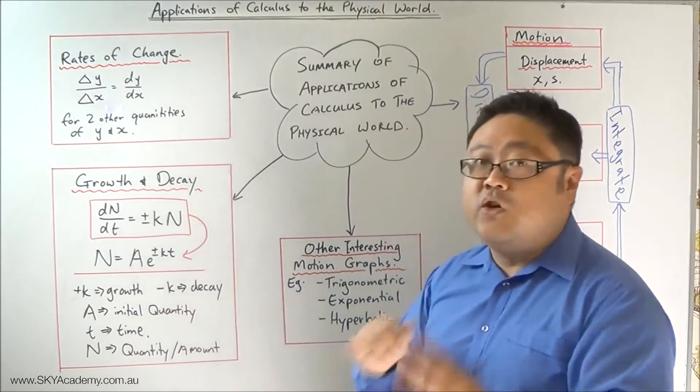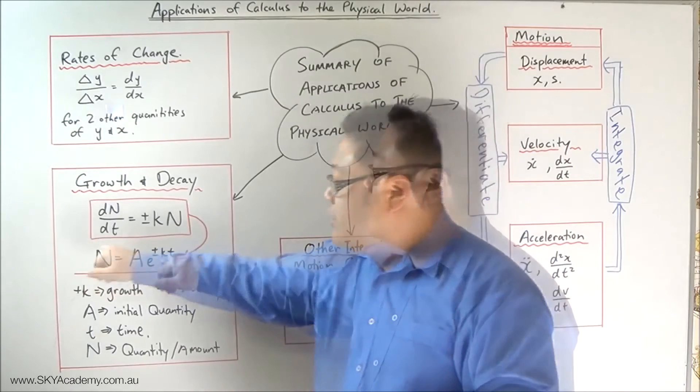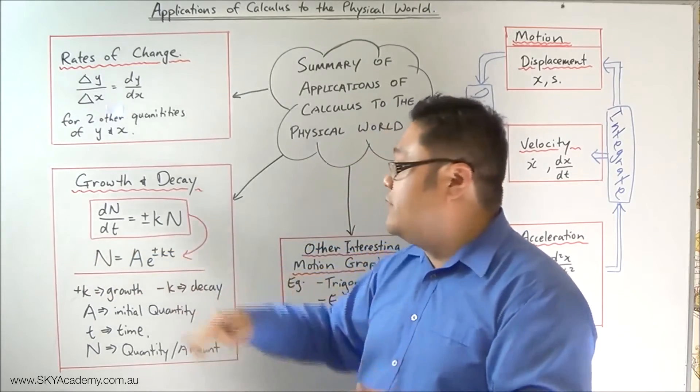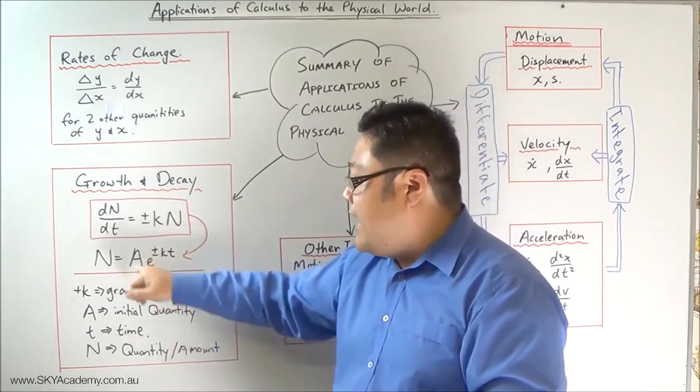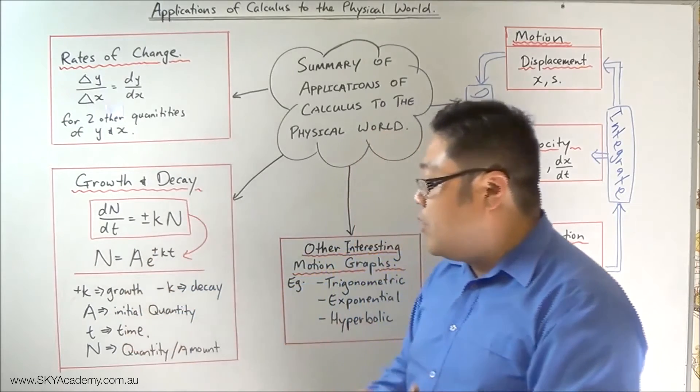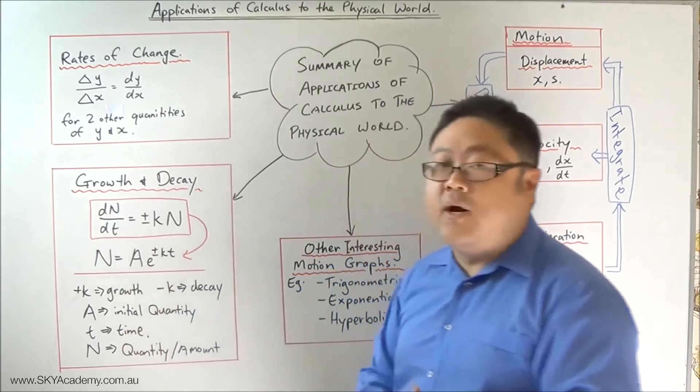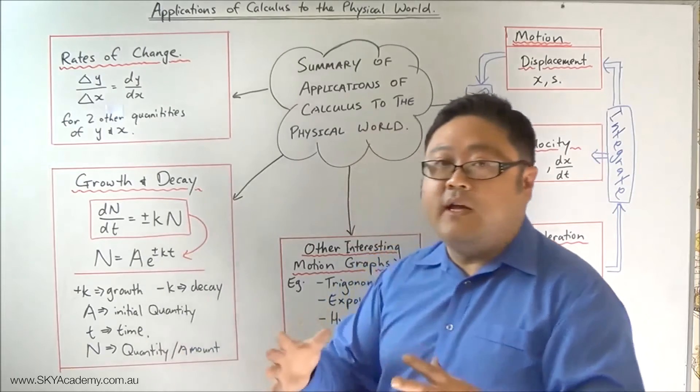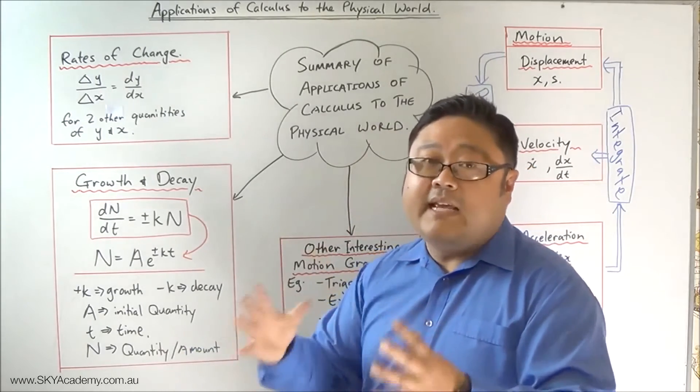For an exponential function that represents the function for growth and decay, A ends up being the initial quantity, t ends up being time, and N is the quantity or the amount at any specific point in time.